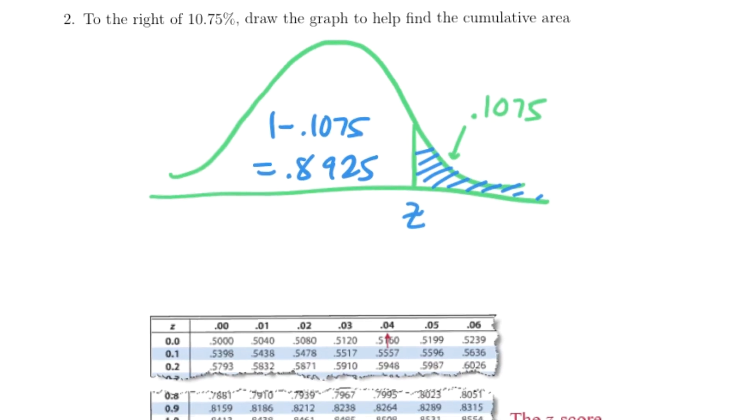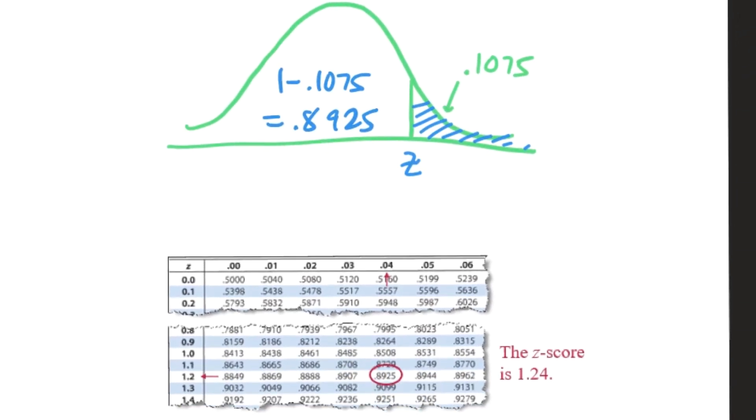Down here, that's going to go with a z-value of 1.2, and then the second decimal place would be 0.04. That gives us the z-value of 1.24. I'm going to put the graphing calculator up on the screen now.